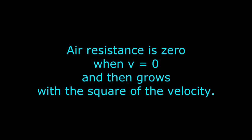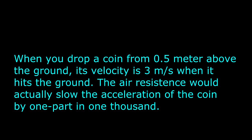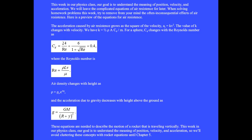Air resistance is zero when the velocity is zero and then grows with the square of the velocity. When you drop a coin from one half meter above the ground, its velocity is three meters per second when it hits the ground. The air resistance would actually slow the acceleration of the coin by one part in a thousand. This week in our physics class, our goal is to understand the meaning of position, velocity, and acceleration. We will leave the complicated equations of air resistance for later. When solving homework problems this week, try to remove from your mind the often inconsequential effects of air resistance.